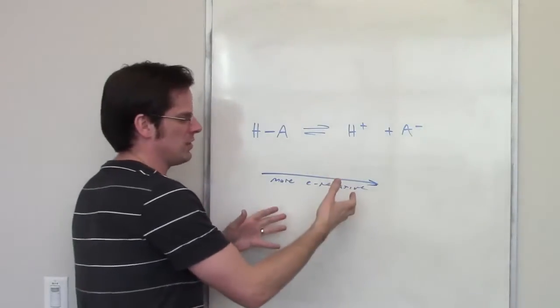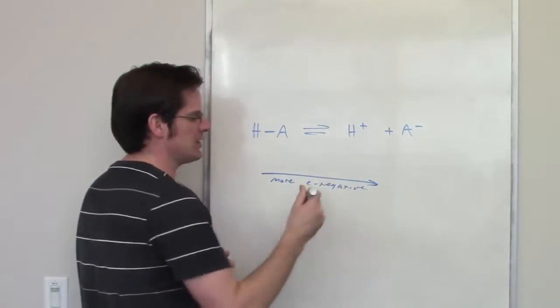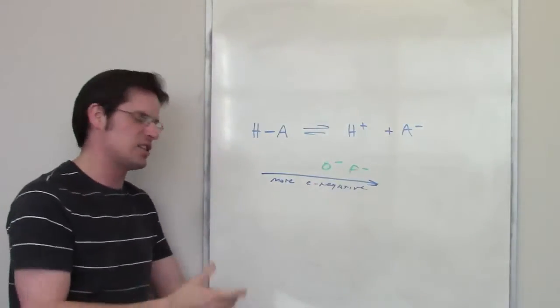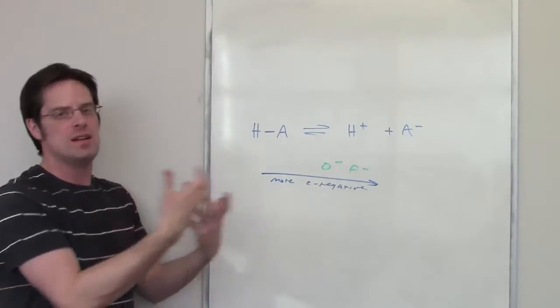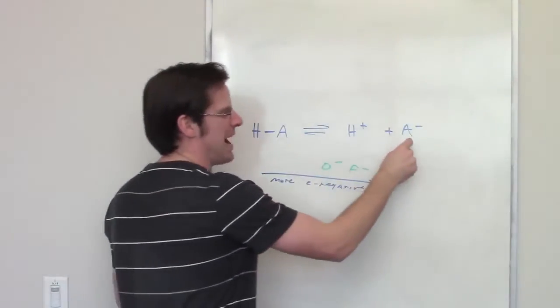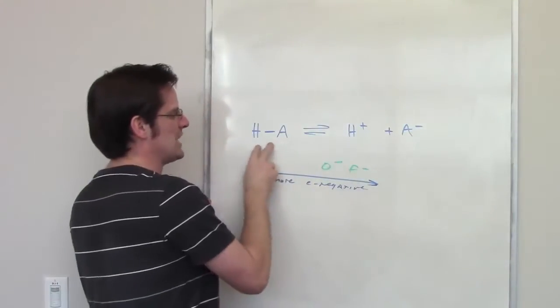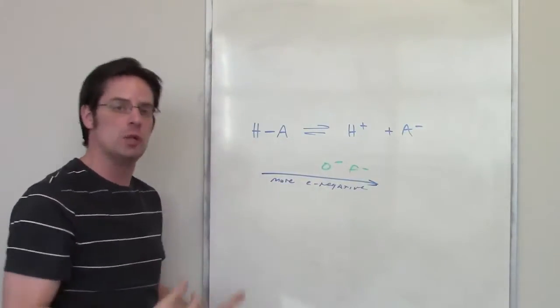So, fluorine, for example, is more able to handle a negative charge than oxygen, because fluorine is more electronegative, it can suck electrons towards itself more than oxygen. Therefore, F- is more stable than O-, and as a result, HF is a stronger acid than H2O.